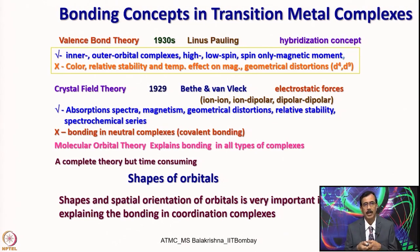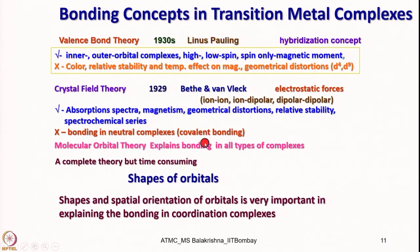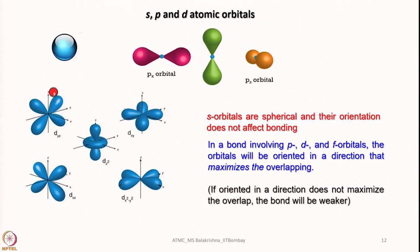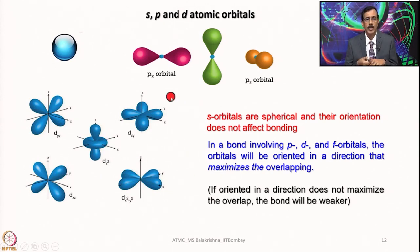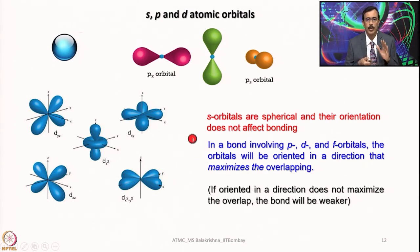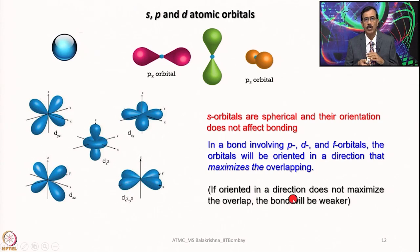Before we start digging deep into these bonding concepts, it is better to understand the shapes of orbitals and their relative orientation in space. S orbitals are spherically symmetrical; we have px, py, and pz orbitals that are dumbbell-shaped and orthogonal to each other; and then we have the five d orbitals: dxz, dyz, dz², dxy, and dx²-y². S orbitals are spherically symmetrical and their orientation does not affect bonding, but in bonds involving p, d, or f orbitals, the orbitals will be oriented in a direction that maximizes overlap. If oriented in a direction that does not maximize overlap, the bond will be weaker.